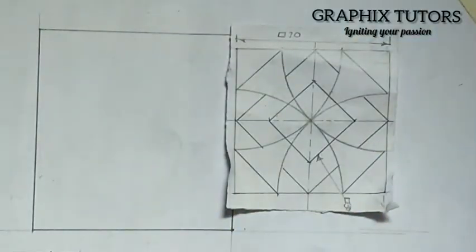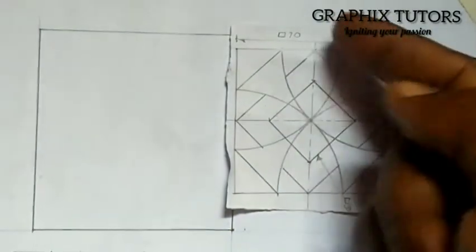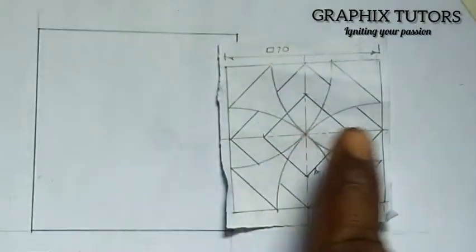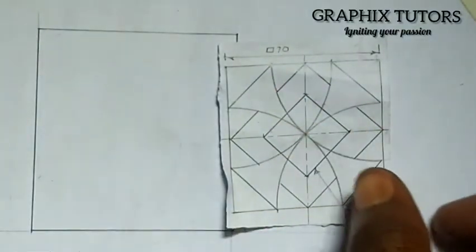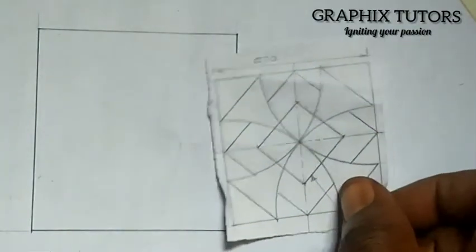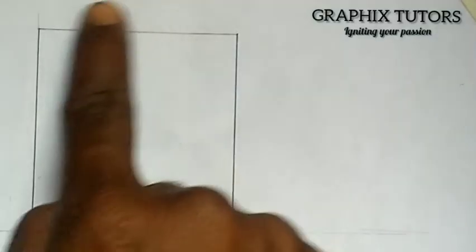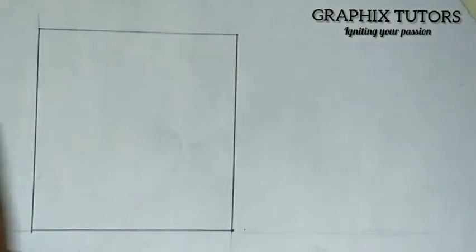Now we want to get the center line of this figure. There are two ways: either you divide 70 by 2 to get 35, also here and here, or draw your diagonal.